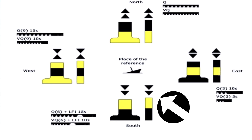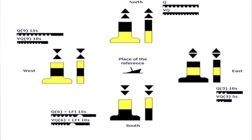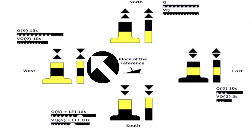South — two black cones pointing down, white light in groups of six flashes followed by one long flash. West — two black cones point to point, white light in groups of nine flashes.